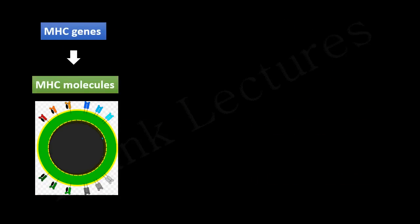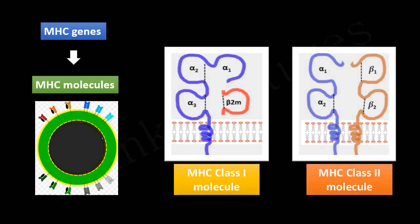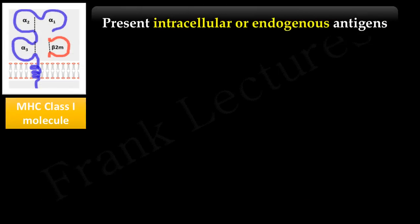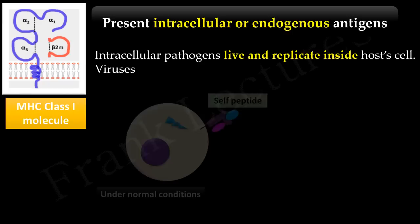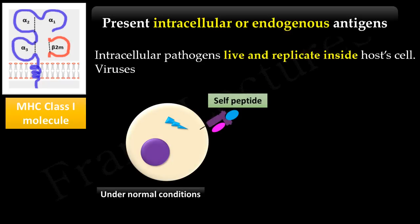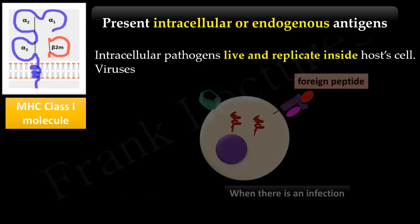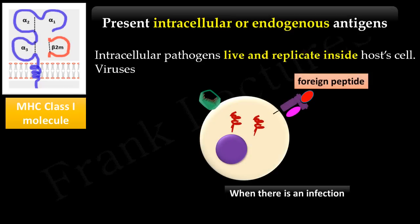In the last video lecture we studied that there are two MHC molecule classes: Class 1 and Class 2. MHC class 1 molecules present peptides derived from intracellular pathogens. Intracellular pathogens live and replicate inside human cells, for example viruses. Under normal conditions, peptides derived from the cytosol of any nucleated cell are displayed by MHC class 1 molecules as an MHC-peptide complex. When a cell is infected by an intracellular pathogen such as a virus, MHC class 1 molecules present the viral peptides for recognition by T cells.